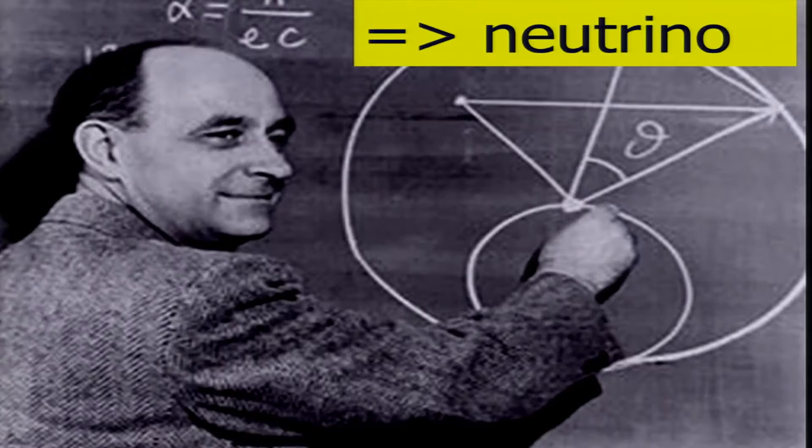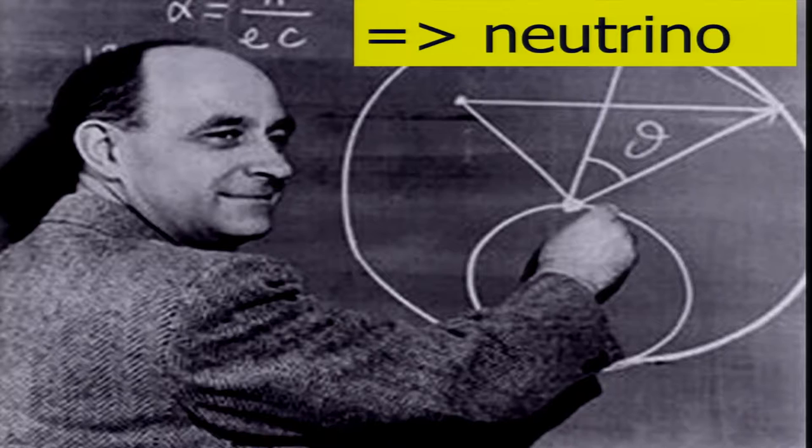The name was changed, because 1932, the real neutron was discovered, so one had to find a new name. And Enrico Fermi finally introduced the name Neutrino, which then was sticking around and which we use today. Now, Pauli assumed that the neutrino mass should not be zero, but extremely small, at least less than the mass of the electron. The present experimental limit on the neutrino mass is already less than 1 electron volt, 0.32 electron volt. So neutrinos are much lighter than electrons.